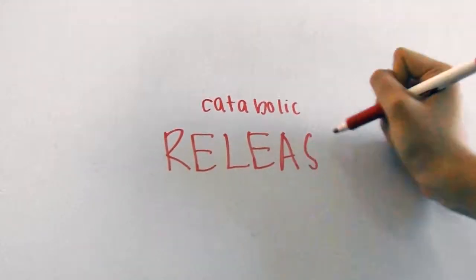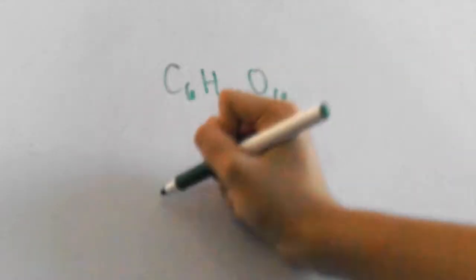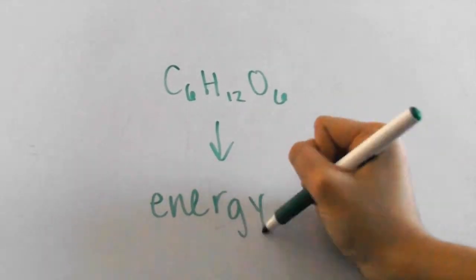Catabolic pathways are ones that release energy. Think of cellular respiration, where a cell takes a glucose molecule and breaks it down to release all of the stored energy in the glucose.